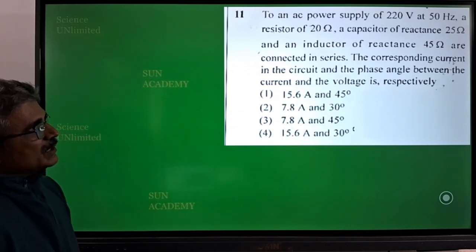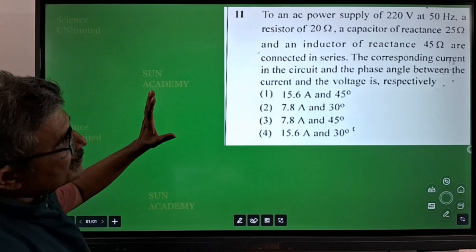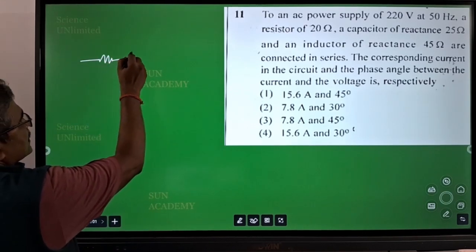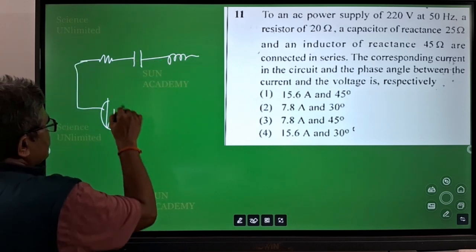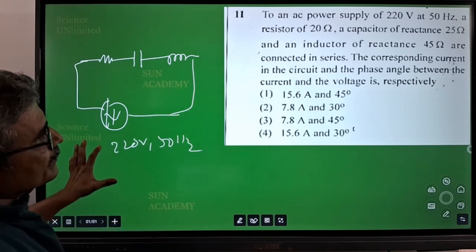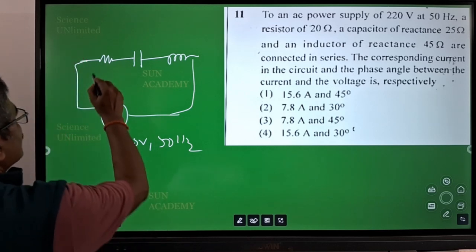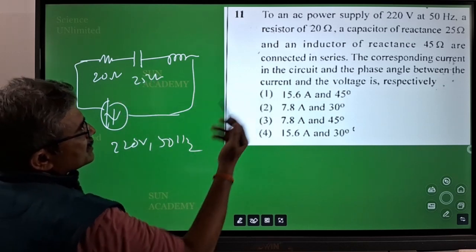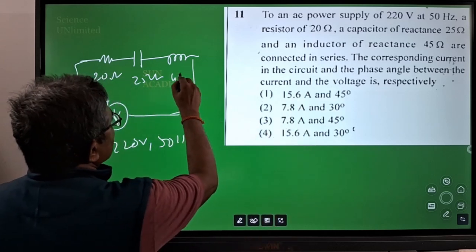So it is from AC current chapter. The thing is, there are resistor, capacitor and inductor in the circuit which are connected in series with a 220 volts and 50 hertz source. The resistance of this resistor is given, that is 20 ohms, and capacitor is given 25 ohm reactance. Reactance of the capacitor is 25 ohms and reactance of inductor is 45 ohms.